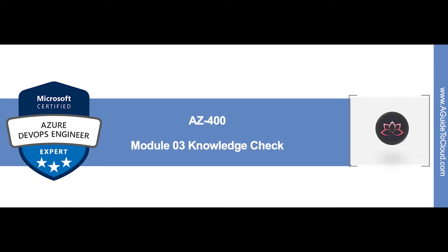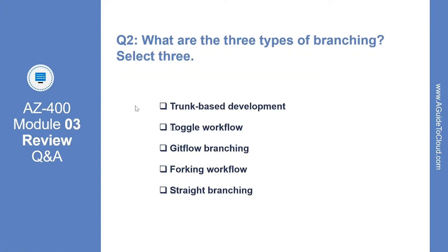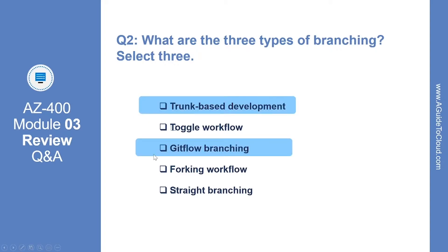In this section we are going to go through Module 3 review questions and answers on AZ-400. Question number 1: which repository type offers the benefits of reduced code complexity, effective code reviews, and sharing of common components? The correct answer is multiple repo. Question number 2: what are the three types of branching? The correct answers are trunk-based development, git flow branching, and forking workflow.